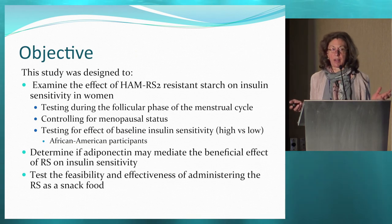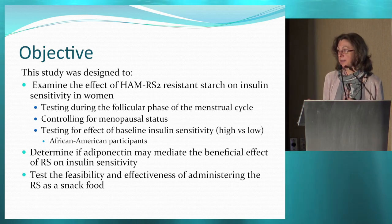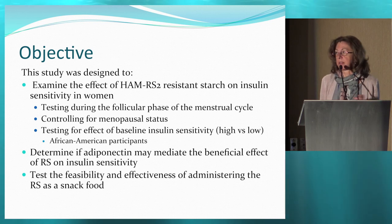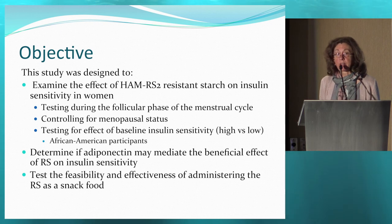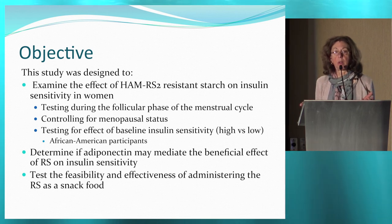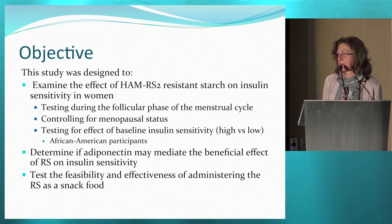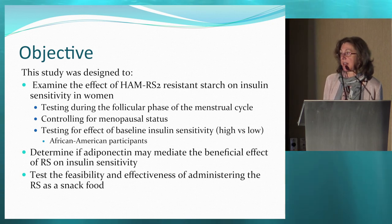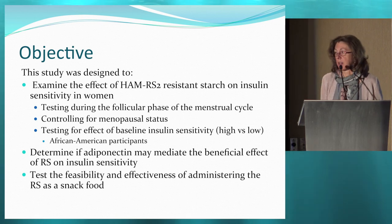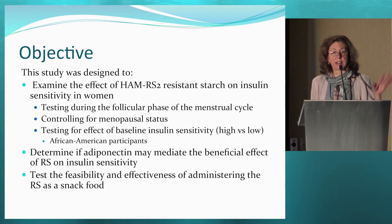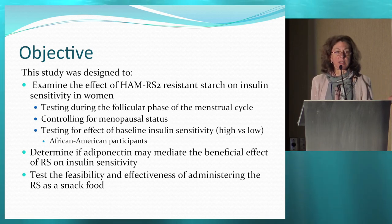With that background, the study I'm going to tell you about had the following objectives. We wanted to look at the effects of high-amylose maize resistant starch on insulin sensitivity in women, controlling for those variables. We tested only during the follicular phase of the menstrual cycle. We controlled for menopausal status by targeting equal numbers of pre- and postmenopausal women. We also tested for an effect of baseline insulin sensitivity — high versus low — using a Gaussian-type distribution analysis to objectively identify groups we called insulin-resistant and insulin-sensitive women.